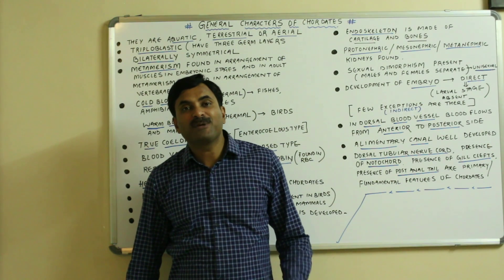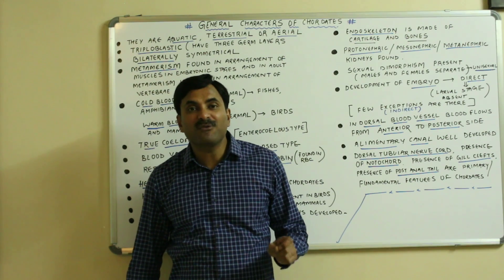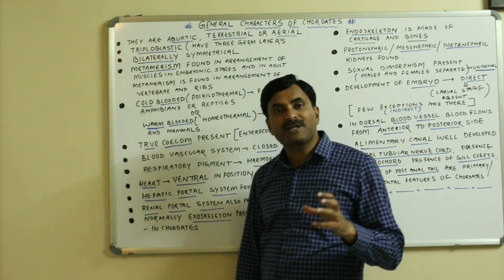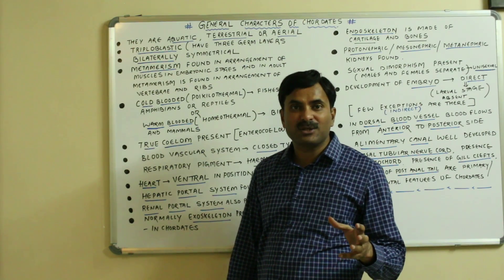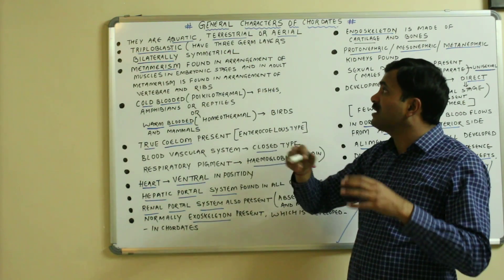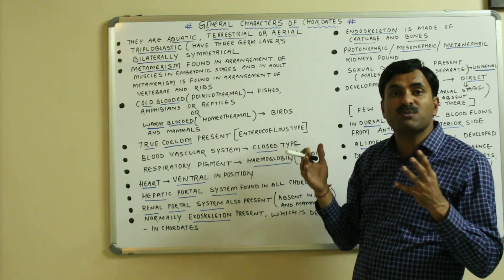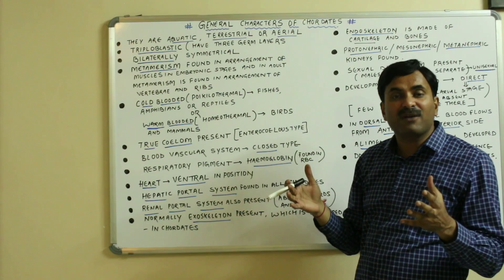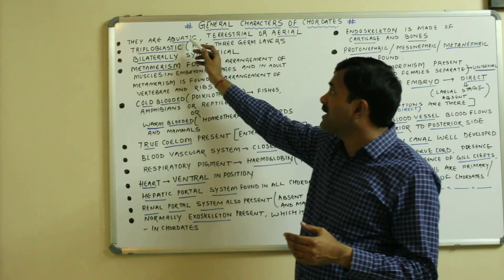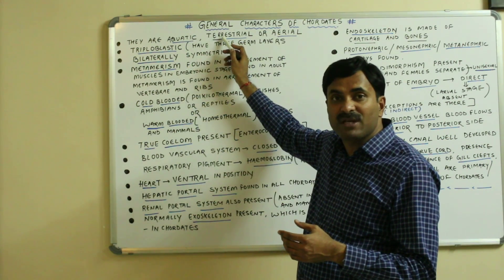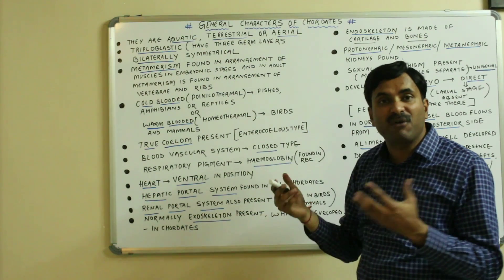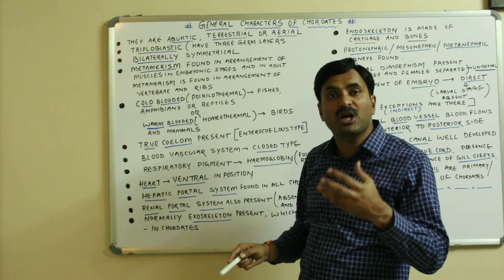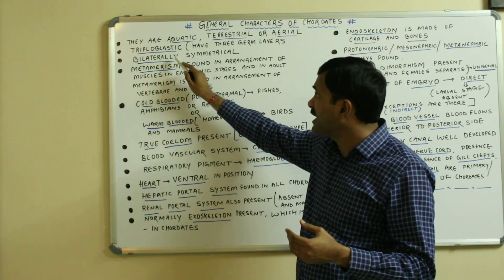Today we will discuss the general features of the chordates. Chordates have very peculiar features. The very first is that chordates are cosmopolitan, meaning they are worldwide and found in all types of habitats — they may be aquatic, terrestrial, or aerial, meaning found in air. They are triploblastic, meaning they have three germ layers.